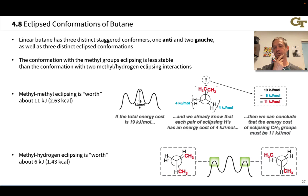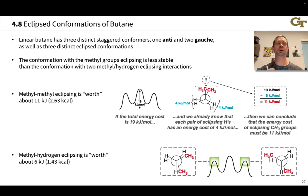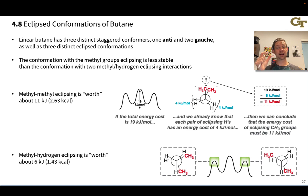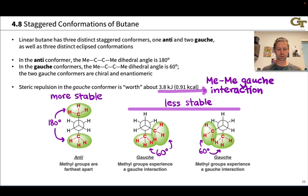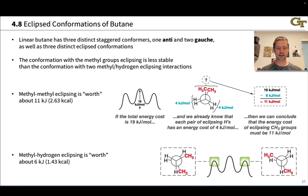There are three distinct eclipsed conformations of butane as well, and in these eclipsed conformations we're going to recognize some new types of eclipsing interactions. We've previously seen CH bonds eclipsing each other and developed an argument that it's worth a penalty of about 4 kilojoules or 1 kilocalorie for CH-CH eclipsing. But because butane has methyl groups linked to the front and back carbons, we will also see CH₃-H and CH₃-CH₃ eclipsing interactions, which are going to have different energetic penalties. We can imagine three distinct eclipsed conformations of butane, two of which are enantiomeric and one of which is distinct.